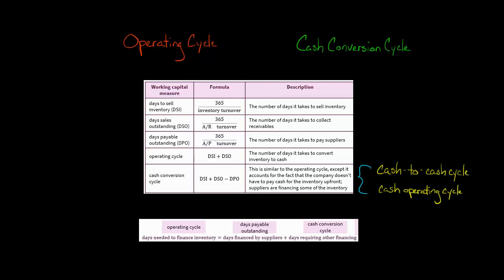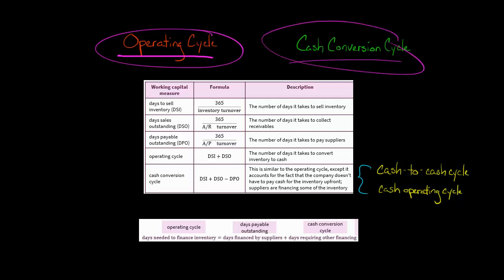Analyzing the length of a company's operating cycle and its cash conversion cycle is very helpful — not just in terms of analyzing business performance and understanding how quickly the company sells its inventory and collects cash from customers, but also in terms of understanding the extent to which this company is going to need to rely on short-term borrowing to finance purchases of its inventory.